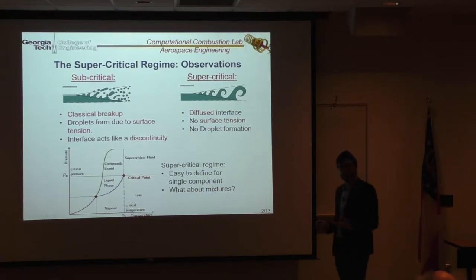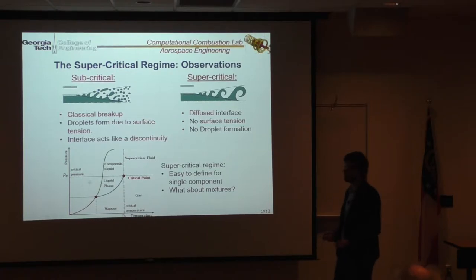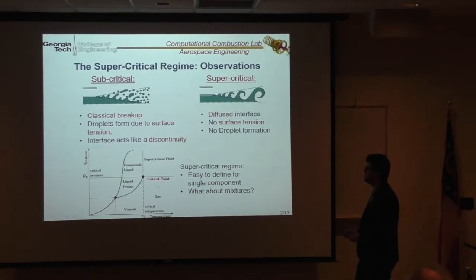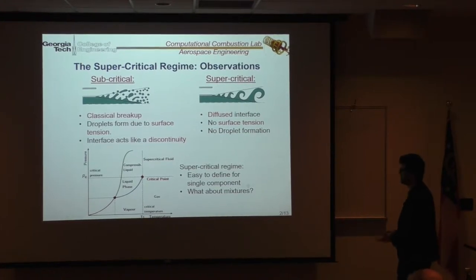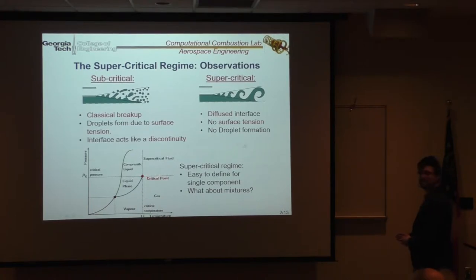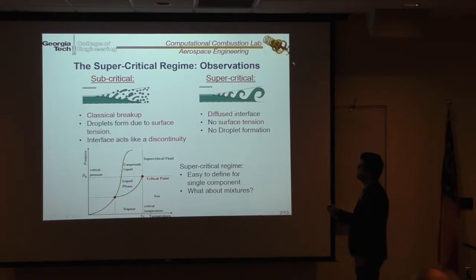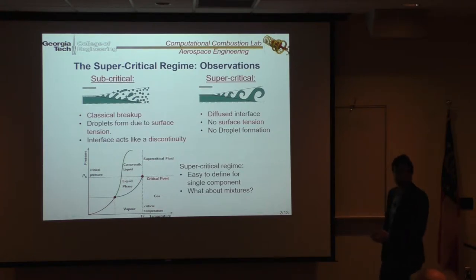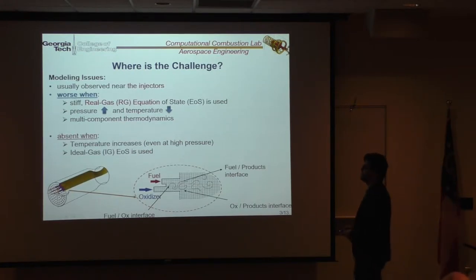And now, how to know whether you are here or there? Well, if you have a single component, like nitrogen, there is the basic phase diagram that all of us know from thermodynamic classes where you have the critical point, and so you can say that if your operating pressure is above your critical pressure, then you are basically in this regime. But is this true for mixtures as well? And this is the type of reason why I'm conducting this research.